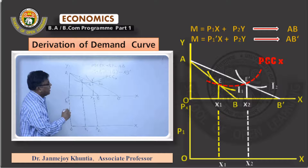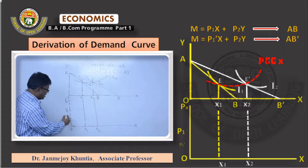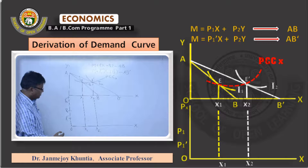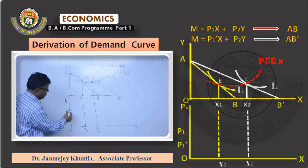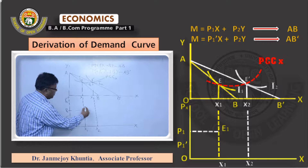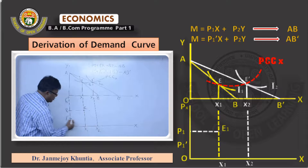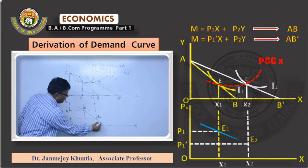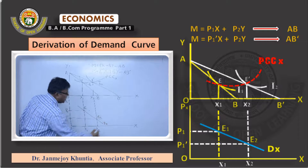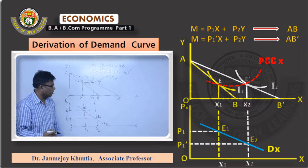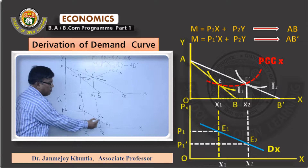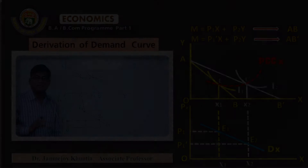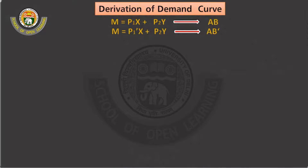P1' is below P1, that is P1' is less than P1, so mark it below P1 on the vertical axis of the lower panel. Find the combination of X1 and P1 at point E1. The combination of P1' with X2 at point E2. Join both E1 and E2 to get demand curve Dx, which is downward sloping. The demand for X is thus derived from the price consumption curve.